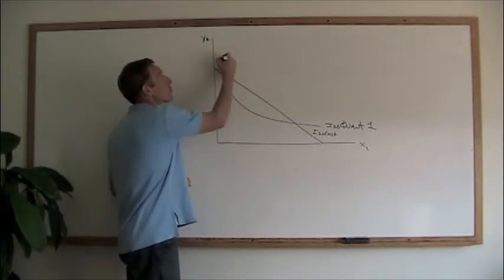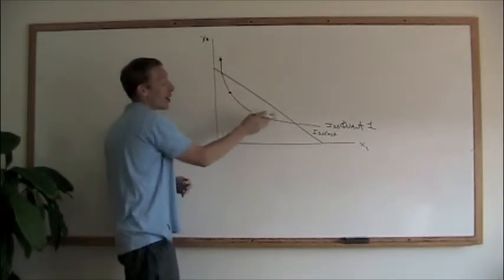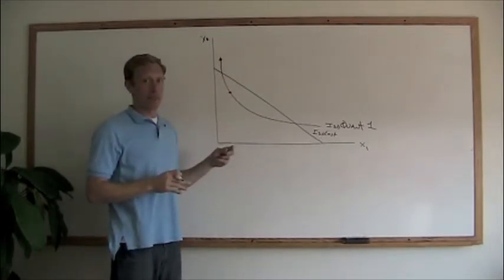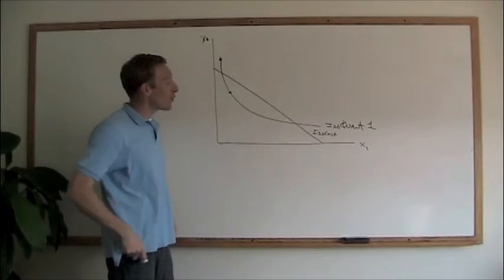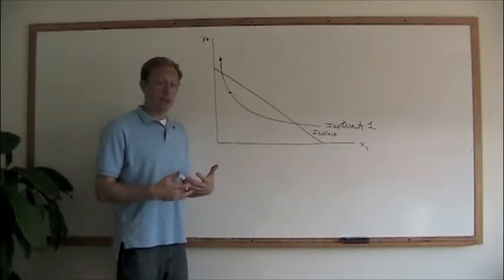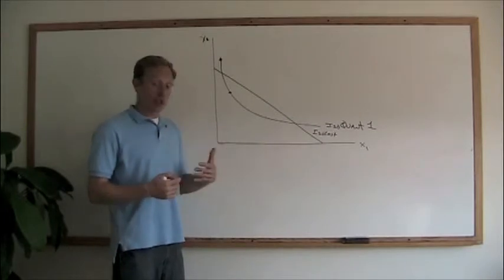If we produce on this isoquant, isoquant 1 at that point, we're exceeding our budget. So we need to reallocate goods or we need to find out a better way of producing a particular output within our budget constraint.